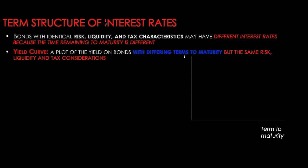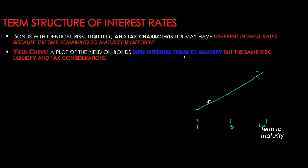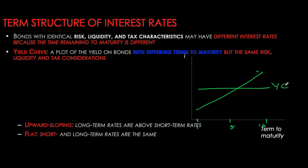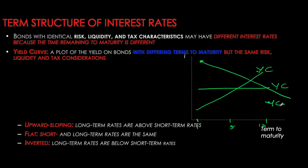On the x-axis we have term to maturity, varying from some months to many years, and on the y-axis we have the yield on a particular bond. If yield on short-term bonds is lower than yield on long-term bonds, you get an upward sloping yield curve. If yields are the same across maturities, the yield curve is flat. If short-term yields are higher than long-term yields, you get a downward sloping, or inverted, yield curve. The yield curve can also be U-shaped or inverted U-shaped.